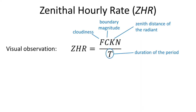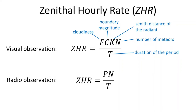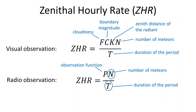T is the duration of the period in which n meteors were seen. In radio observation, the zenith hourly rate is calculated by the second formula on the screen. And instead of correction factors, the observation function P is used, which depends on the configuration of the transmitting and receiving radio device, power and distance of the emitter, and oscillation of the number of meteors.